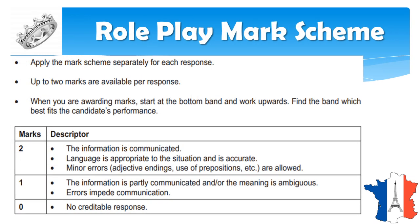First, let's see the role play marking scheme. Remember, the marking scheme is applied separately for each response. Up to two marks is available for each response — that means a candidate can get 0, 1, 1.5, or 2. When the teacher is awarding marks, they start from the bottom-most band and work upwards.